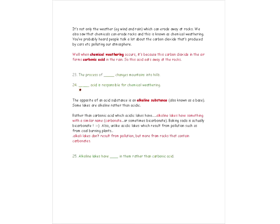Alkaline is just another name for a base — the opposite of an acid. Some lakes are alkaline instead of acidic. What causes alkaline lakes? Carbonates or bicarbonates — for instance, baking soda is basically bicarbonate. Carbonic acid, on the other hand, causes acidic lakes. Acidic lakes come from pollution, but alkaline lakes come from carbonates or bicarbonates. So alkaline lakes contain carbonates or bicarbonates rather than carbonic acid.